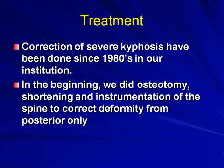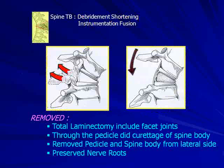Our center has treated TB spine since 1960. In the beginning, we treated TB without surgery — only bed rest, then medical treatment, then a brace after the pain subsided. In the 1970s, we started surgery for TB spine following the Hong Kong method — treatment from the anterior approach followed by anterior fusion. Since 1980, we corrected severe kyphosis with the shortening procedure.